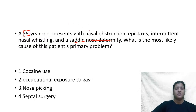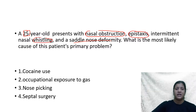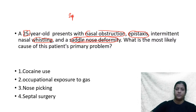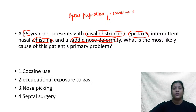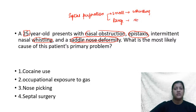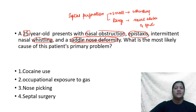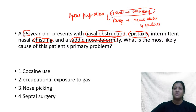The patient has nasal obstruction, epistaxis, intermittent nasal whistling, and saddle nose deformity — all in favor of septal perforation. A small perforation typically presents with whistling sounds, while a large perforation typically presents with nasal obstruction and intermittent epistaxis. Here the whistling is intermittent and nasal obstruction is the major symptom, suggesting a larger perforation.